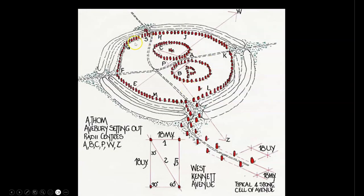And here is another diagram highlighting the perimeter, the dual stone circle systems, and also showing a structure known as the West Kennet Avenue that I will be discussing in just a moment.